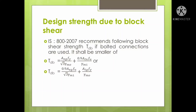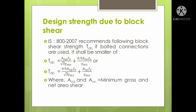In the block shear equations, AVG is the minimum gross area in shear, AVN is the minimum net area in shear, and ATN is the net area in tension.